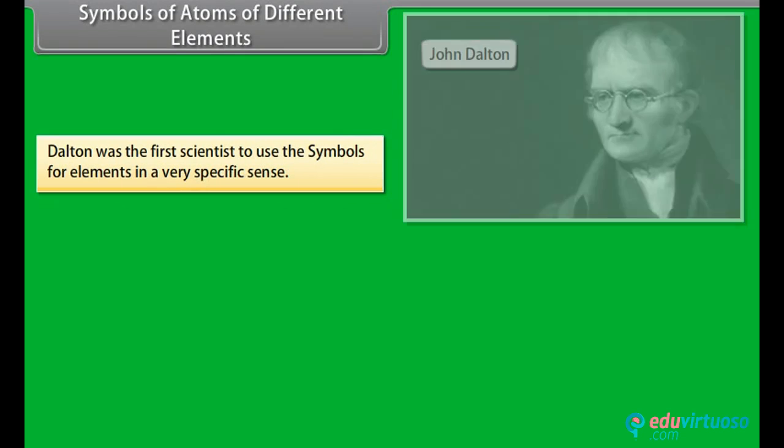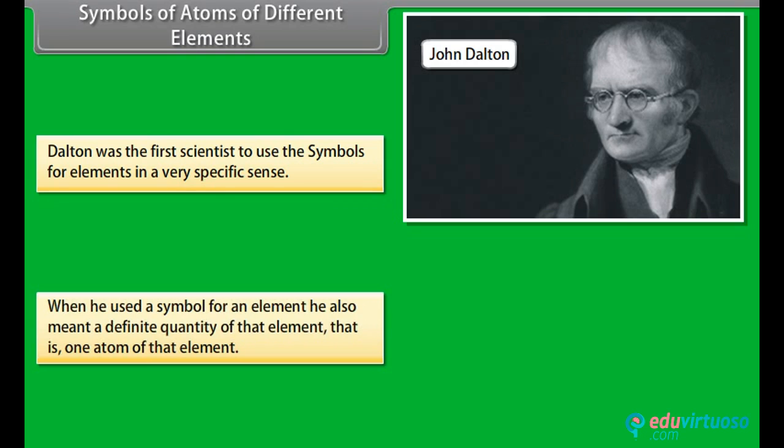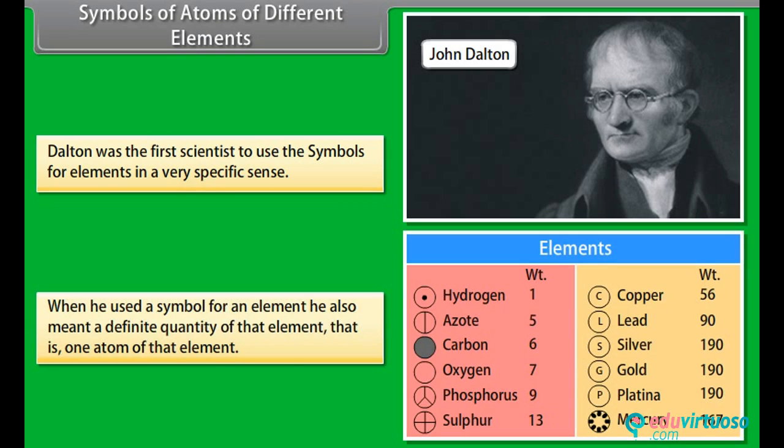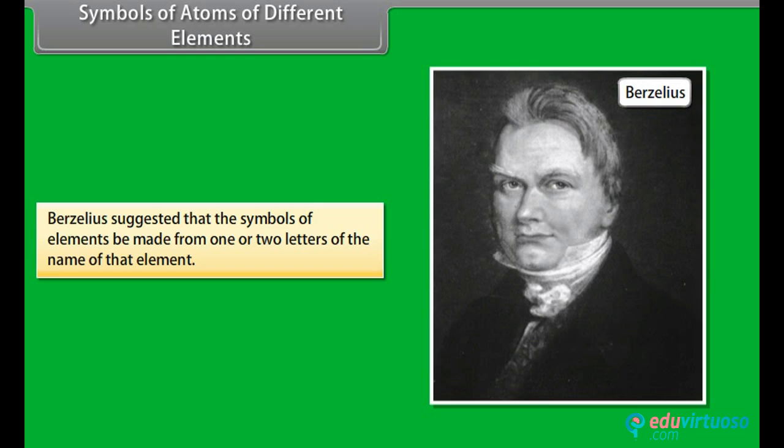Dalton was the first scientist to use the symbols for elements in a very specific sense. When he used a symbol for an element, he also meant a definite quantity of that element, that is, one atom of that element. Berzelius suggested that the symbols of elements be made from one or two letters of the name of that element.